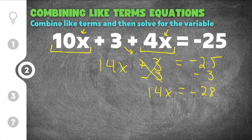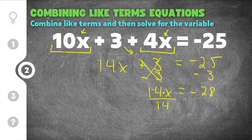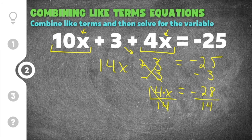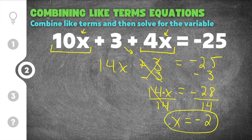Remember, the coefficient is like saying multiplication — this is 14 times x. The opposite of 14 times x is to divide by 14. So we divide by 14 on the left so the 14s cancel, and we also divide by 14 on the right: negative 28 divided by 14 is negative 2. So x equals negative 2 is the solution to this combining like terms equation.